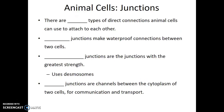When we look at the actual connection points between animal cells, it turns out there are three types of direct connections. The first of these are known as tight junctions. Tight junctions make a waterproof connection between two cells — meaning water won't be able to pass from one side of the tissue to the other. Epithelial tissue, which makes up the surface of our skin, is often connected by tight junctions.